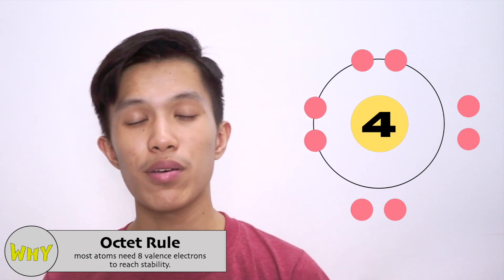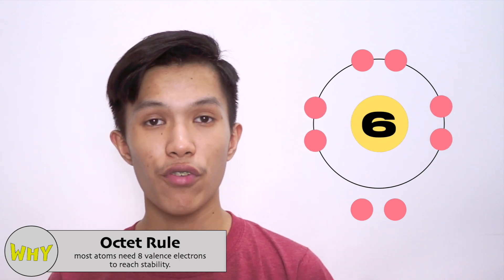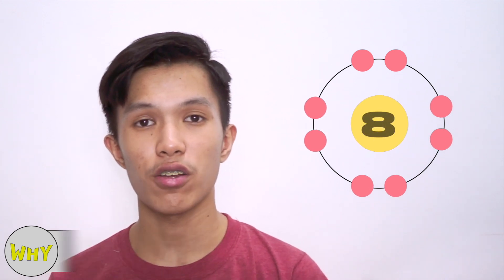Lewis symbols are used to visualize the valence electrons of an atom, whether they exist as lone pairs or in bonds. We have to keep in mind that based on the octet rule, most atoms need a total of 8 valence electrons to become stable.